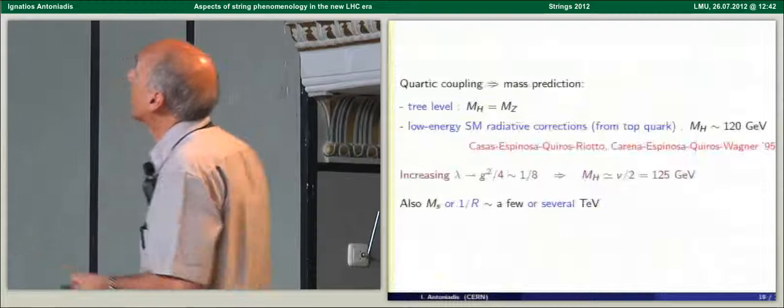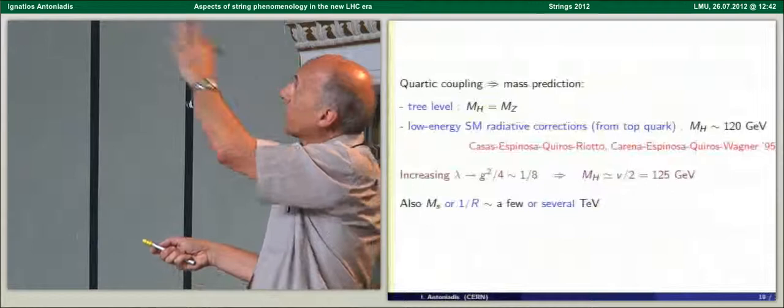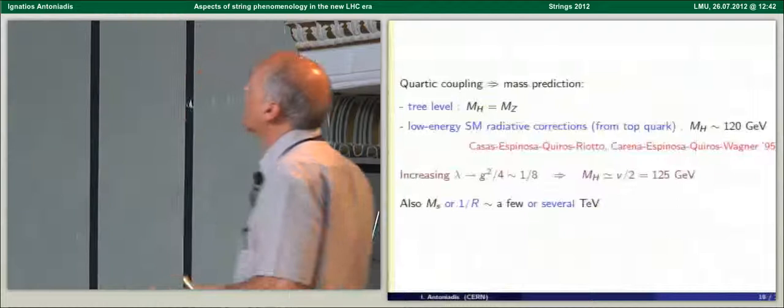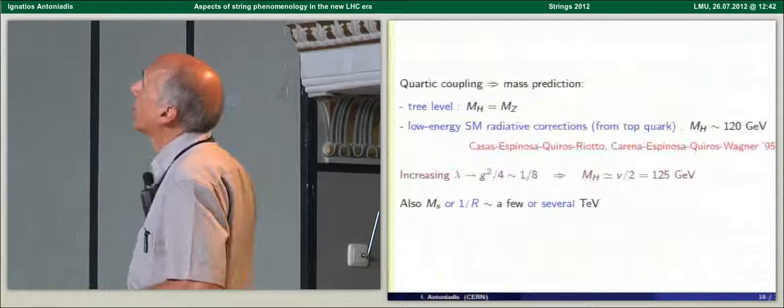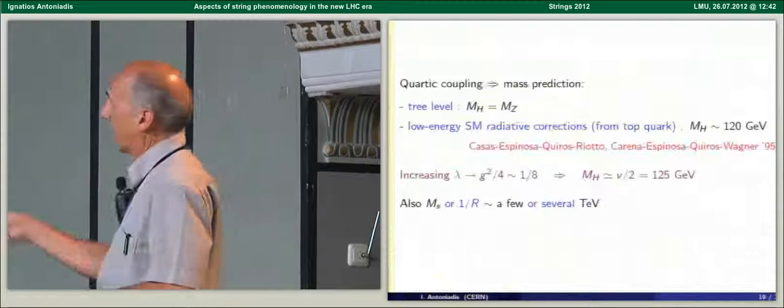And what one sees is of course that the string factor here suppresses the ultraviolet divergence while in the infrared it goes to 1 and reproduces the field theory. Now this integral can be done numerically and one can show that as a function of the radius there are two interesting limits.